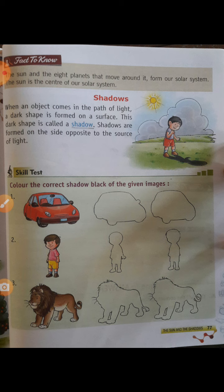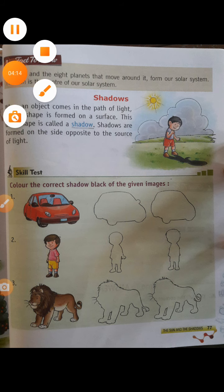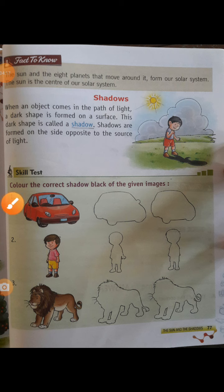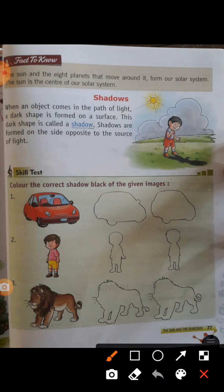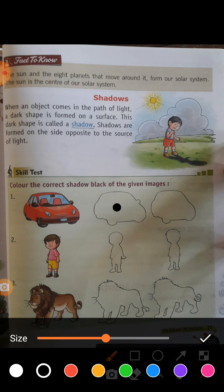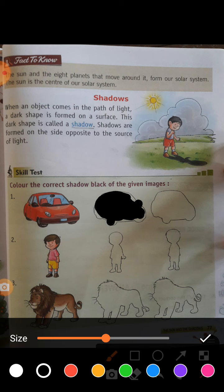Shadow हमेशा black color का ही होगा, ऊपर भी यह बताएगा कि एक black से बनता है। तो इसमें आपको color fill करना है। अब आपको यह समझना है कि इसका side कौन सा हो सकता है। जैसे first car है, तो car का side इन दोनों में कौन होगा — देखिए इसमें headlight बना हुआ है, इसमें headlight नहीं बना हुआ। तो हम इसको black color में करेंगे। इस तरह के car को अच्छे से आप color कर लेंगे।